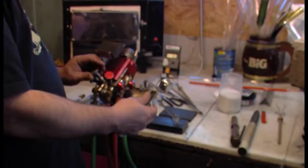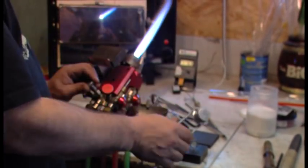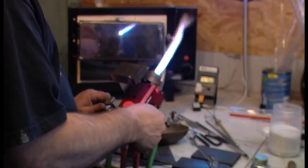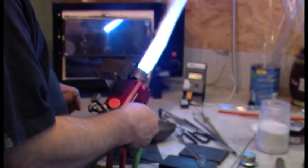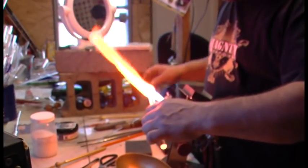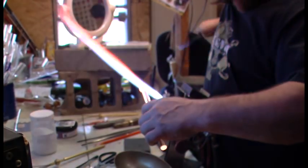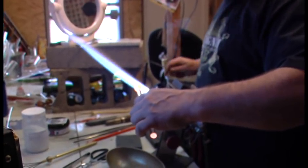After ensuring that he has all the proper tools and materials and has taken all the safety precautions, Dan will begin the process of making a glass mushroom pendant. The first thing that Dan does is take a 12 millimeter glass rod and heats up the end until it is molten.